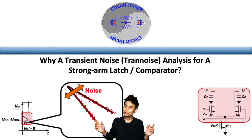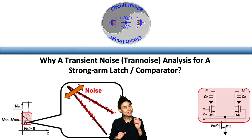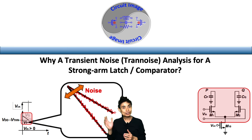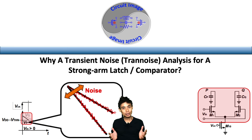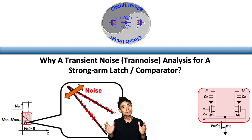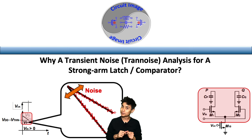Last time, we discussed why we need a dedicated noise analysis for a sampler, such as a strong arm latch comparator, which cannot be applied by the AC noise analysis we've learned in the Microelectronics 101 textbook.